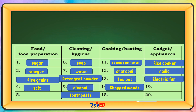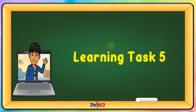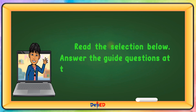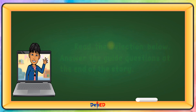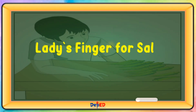Learning Task 5. Read the selection below and answer the guide questions at the end of the story. The story is 'Ladies Finger for Sale' by May Natividad.